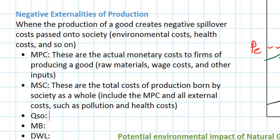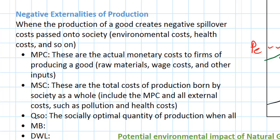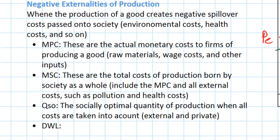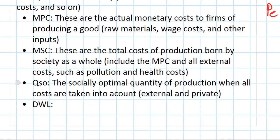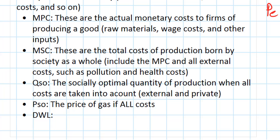In our graph, QSO represents the socially optimal quantity of production when all costs are taken into account — both external and private costs. Additionally, if the price of natural gas reflected not just the private costs of production but the external costs as well, then it would be more expensive. So we can put a price on the graph at the intersection of marginal social cost and marginal benefit representing the socially optimal price, PSO. PSO is the price of gas if all costs — both private and social — were taken into account.